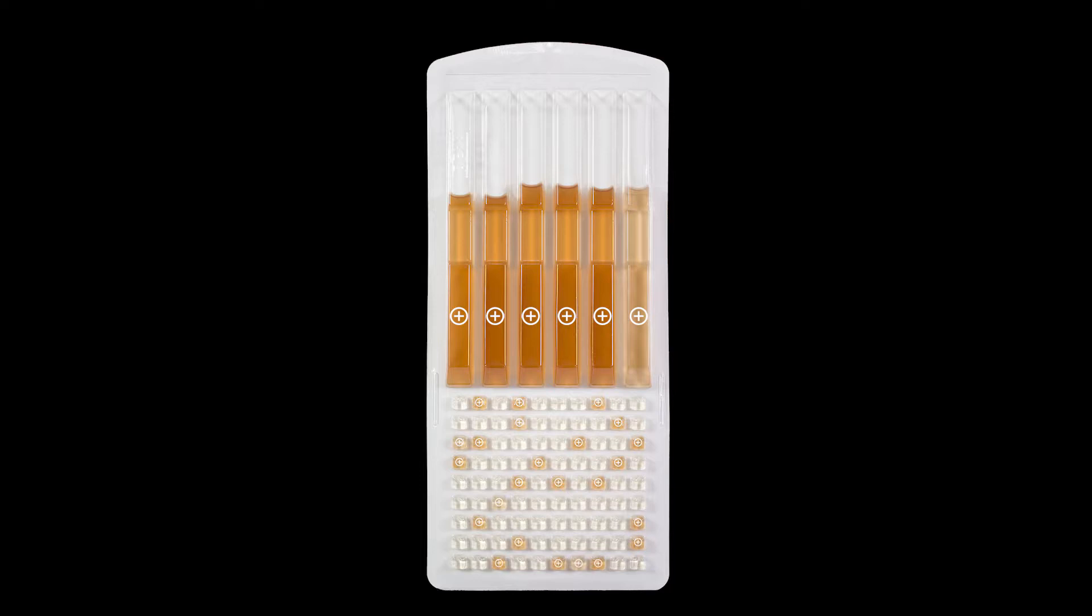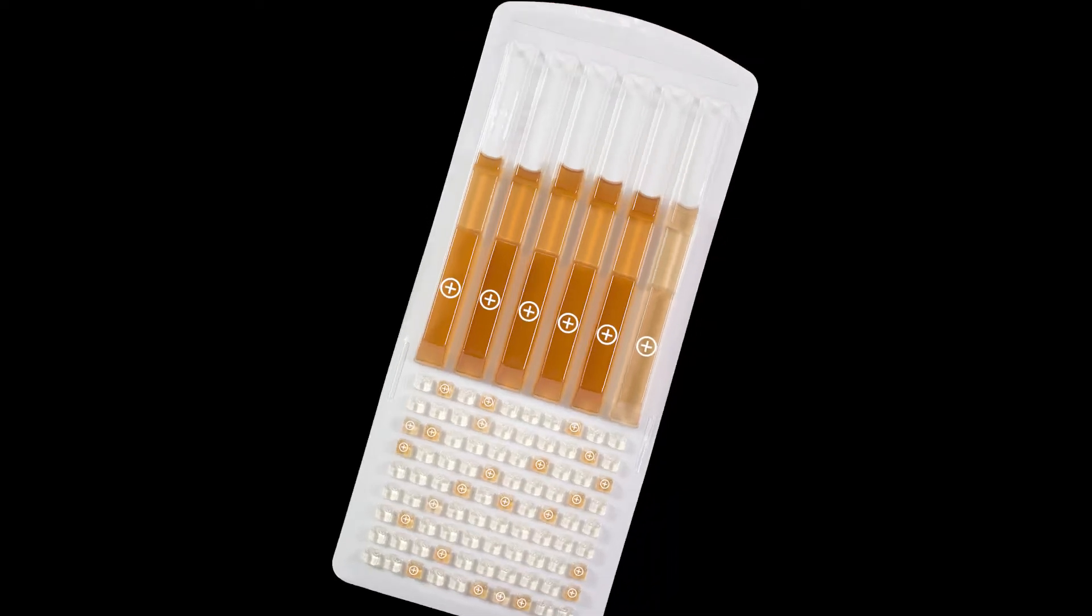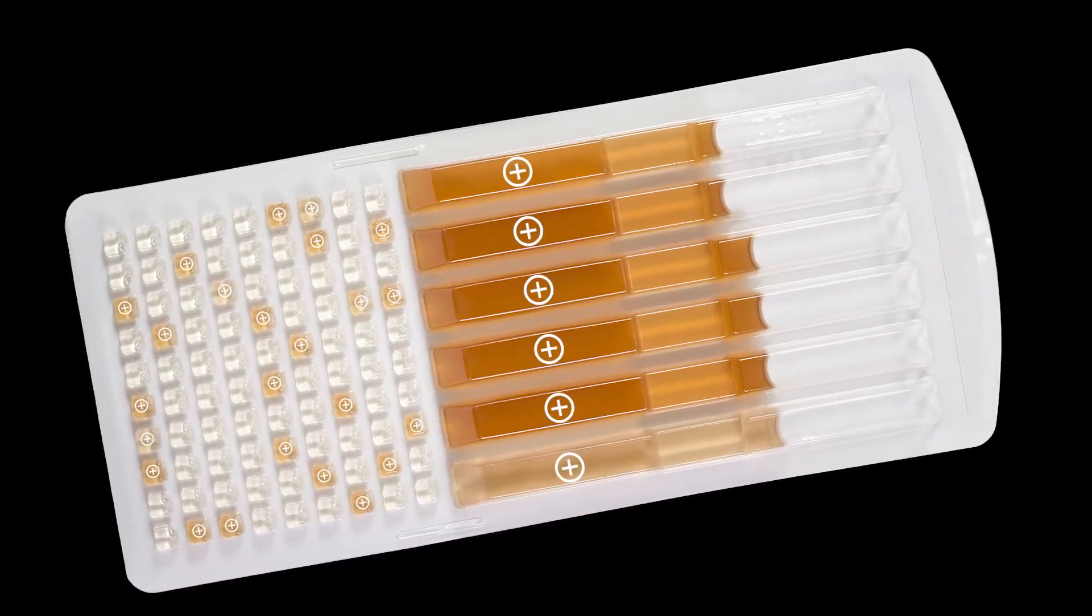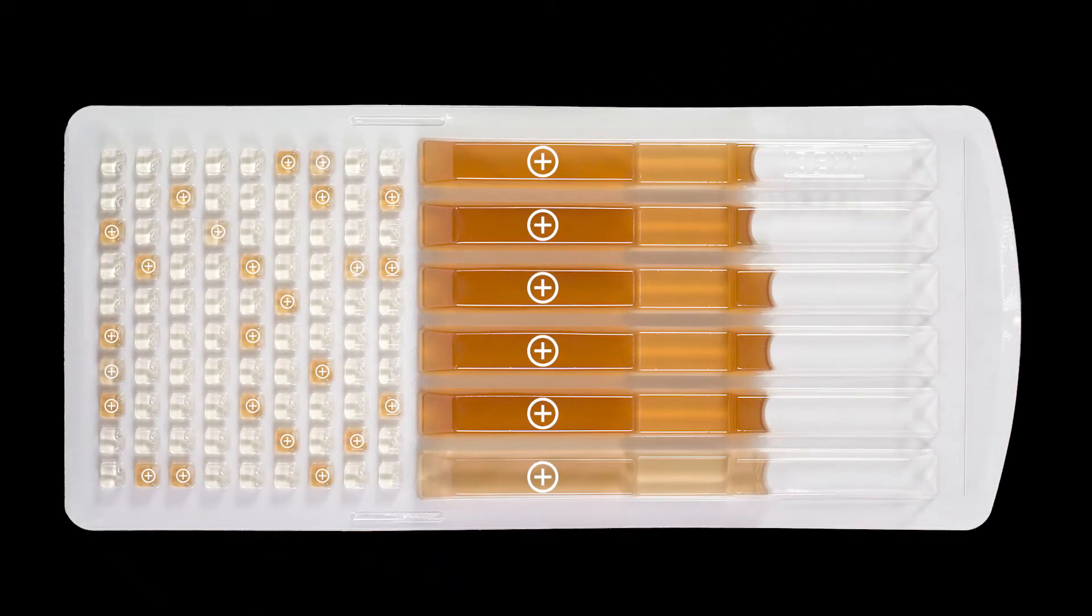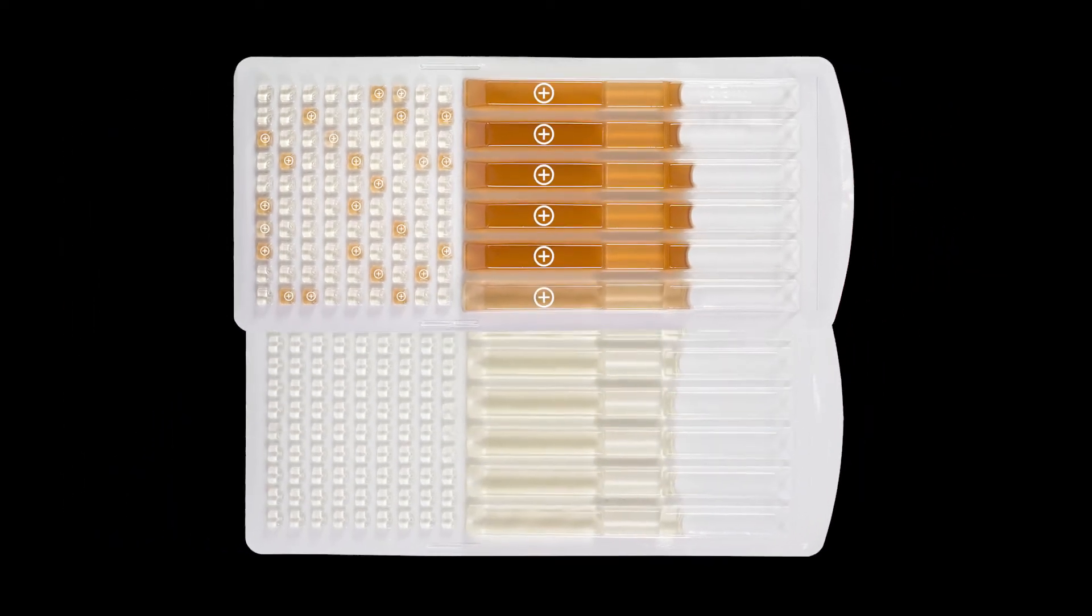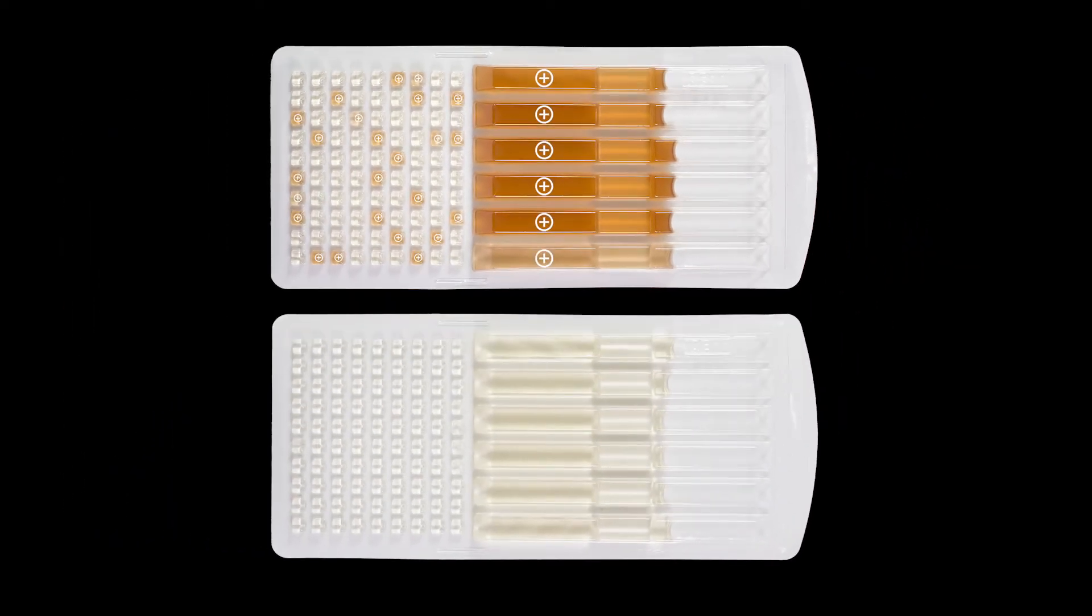Any change to a brown color and or turbidity greater than the negative control indicates a confirmed positive for Legionella pneumophila. Here is an example with both strong and weak positive wells. There are a total of six positive large wells and 24 positive small wells. If you're unsure whether a result is positive, compare the sample side-by-side with a known negative sample.